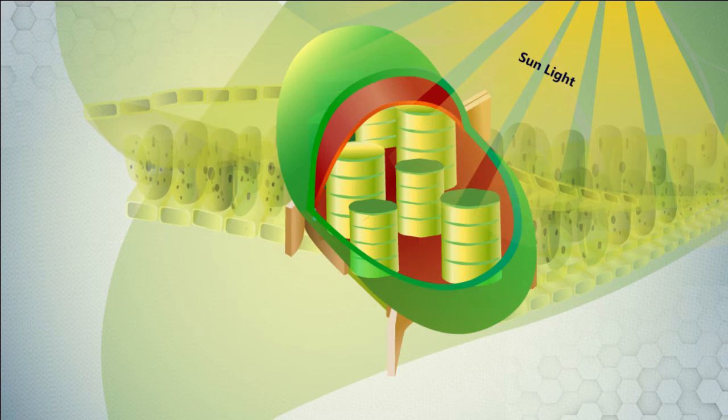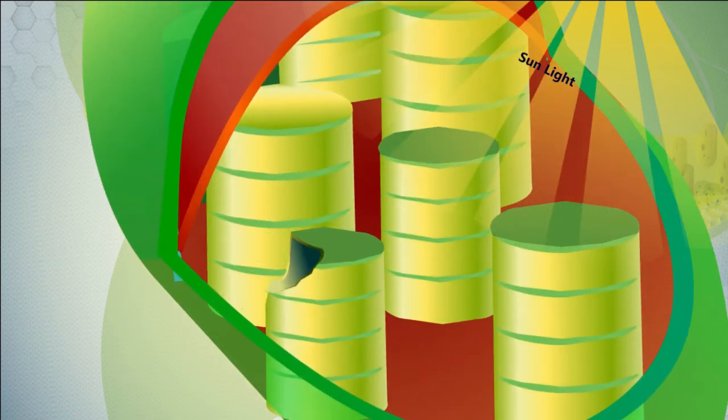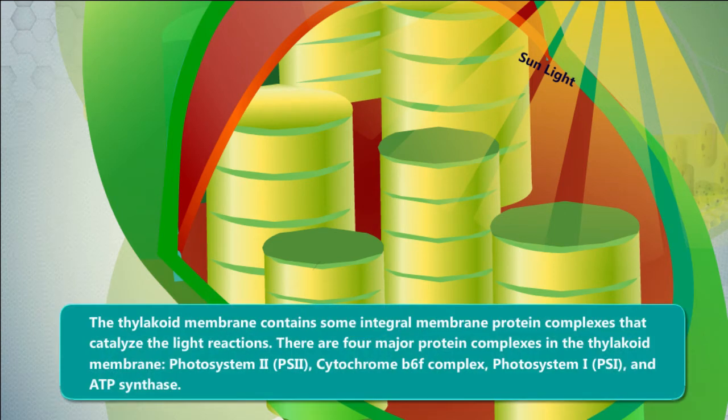The inner side of the thylakoid is called the lumen. The thylakoid membrane contains integral membrane protein complexes that catalyze the light reactions. There are four major protein complexes.